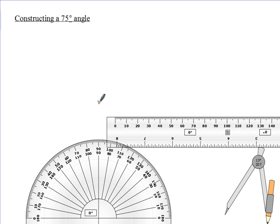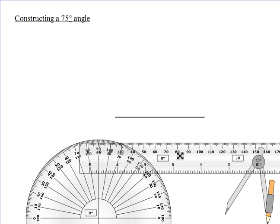Constructing a 75 degree angle, we're going to draw a line to be one of the legs on the angle, and we will just call that line MN.